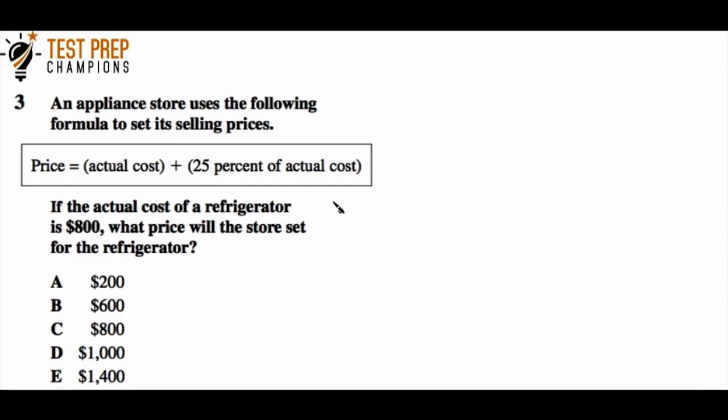An appliance store uses the following formula to set its selling prices: Price equals actual cost plus 25% of actual cost. If the actual cost of a refrigerator is $800, what price will the store set for the refrigerator? Pause the video and try this.